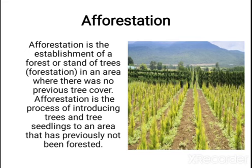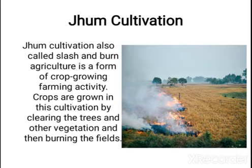The planting of trees in urban areas is also able to reduce air pollution. Joom cultivation, also called slash and burn agriculture, is considered highly destructive to the environment as it involves burning and clearing vast areas of forests so that cultivation can be done for a few years.